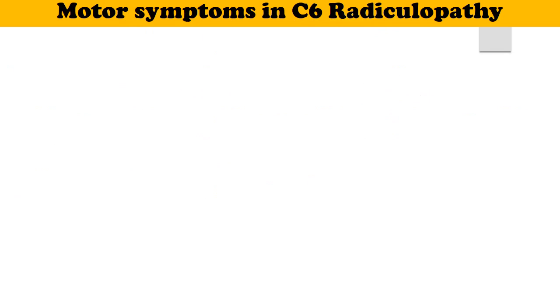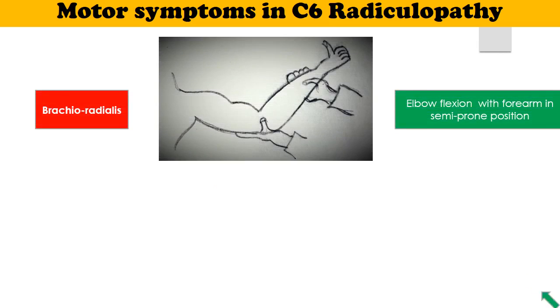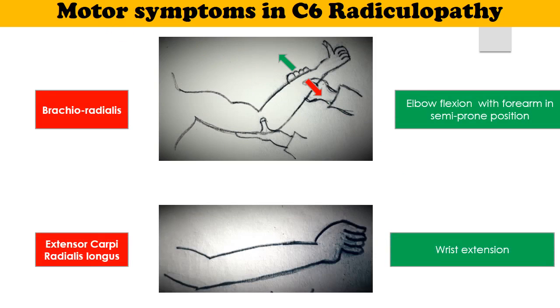All the muscles mentioned in the previous slide should be tested for C6 Radiculopathy, with particular attention to two muscles. The first is brachioradialis, which is tested by elbow flexion with the forearm in semi-prone position, and the second is extensor carpi radialis longus, tested by asking the patient to do wrist extension.